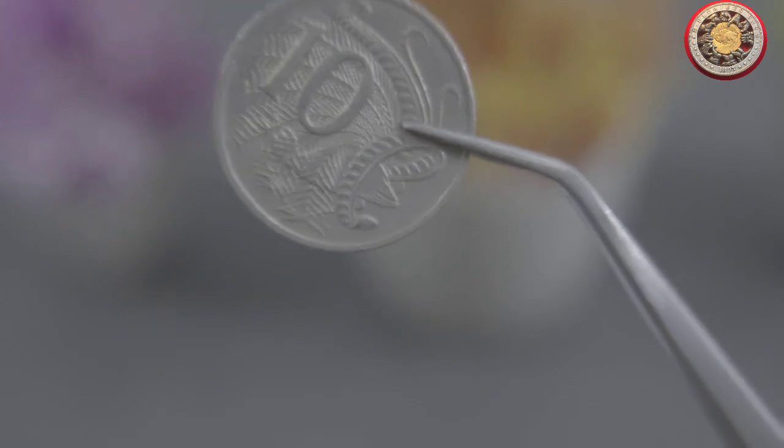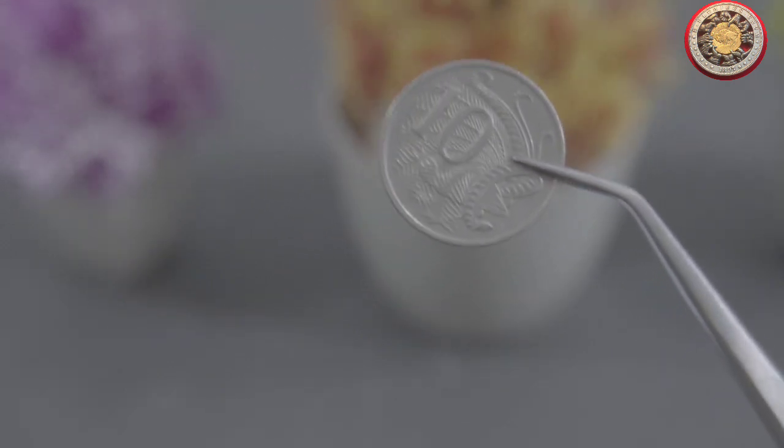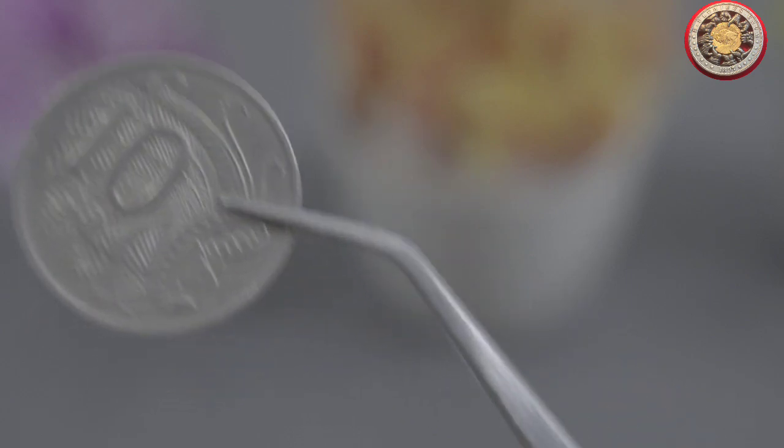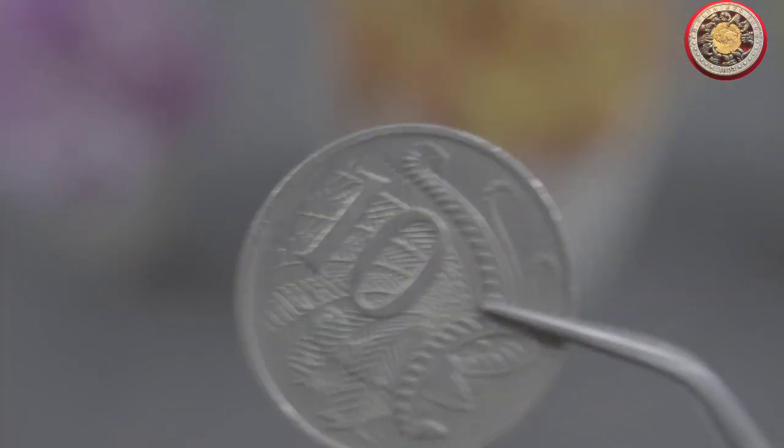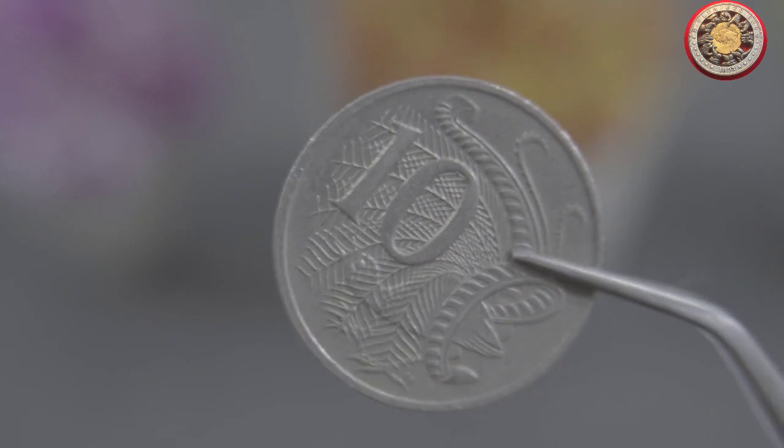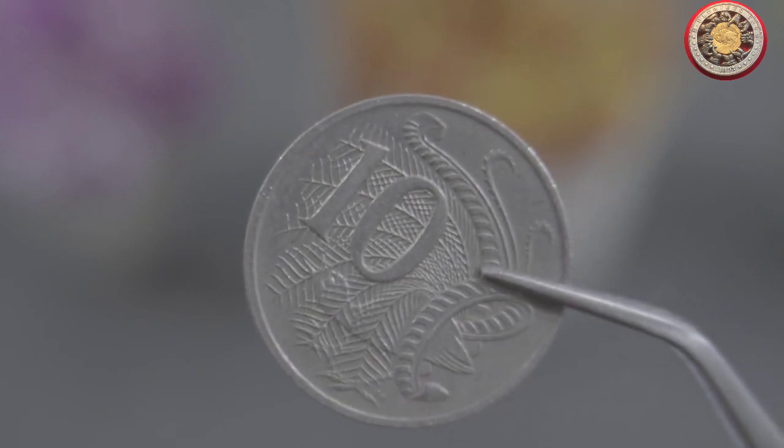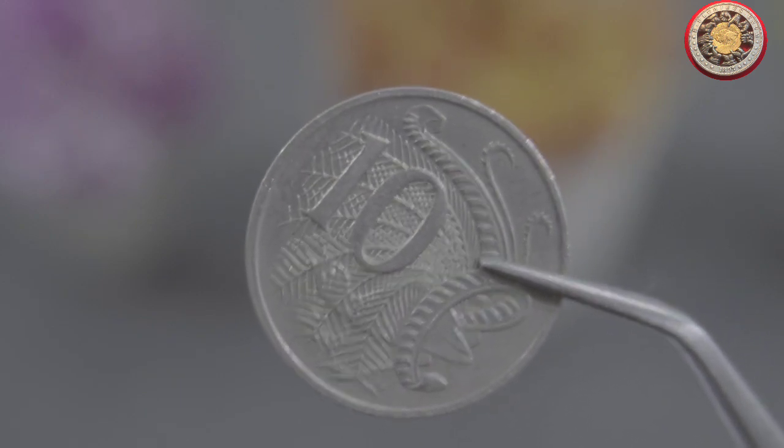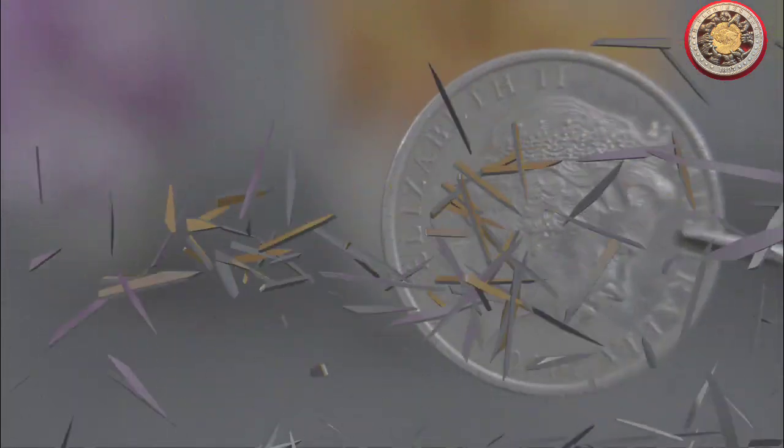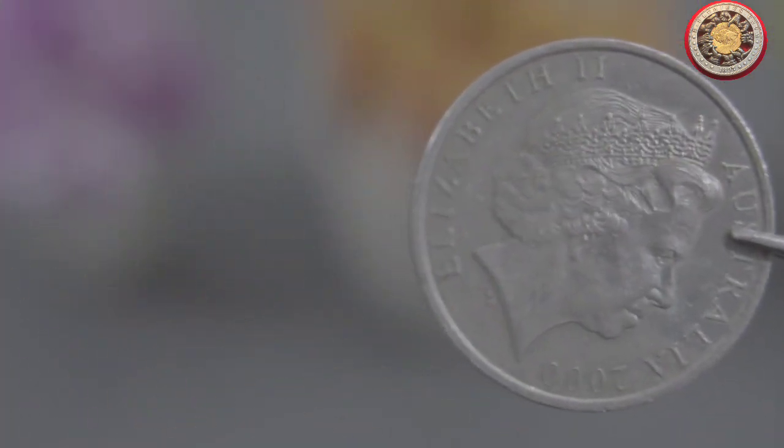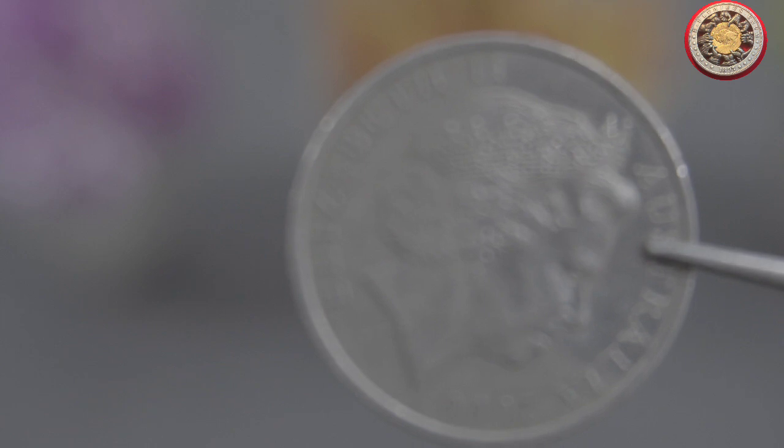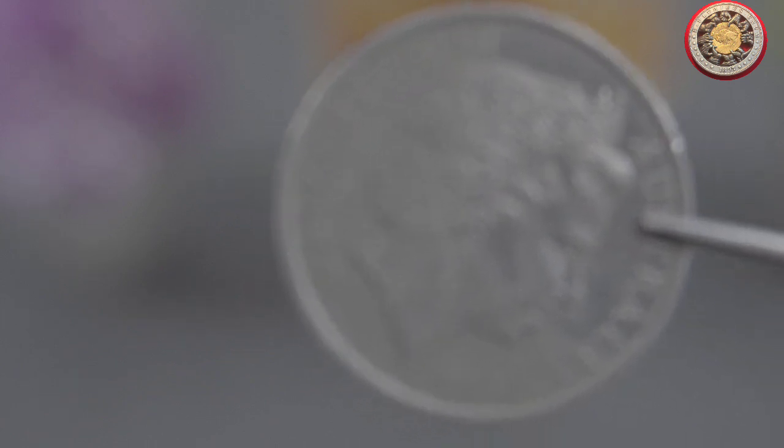So, if you happen to have a 10-cent coin from Australia dated 1992, it's worth taking a closer look at. Check the condition and see if it's uncirculated. If it is, you could potentially sell it to a collector for a nice chunk of change. And who knows, maybe you have some other coins lying around that are worth more than face value. It's always a good idea to do a little research and see what you might have in your collection.